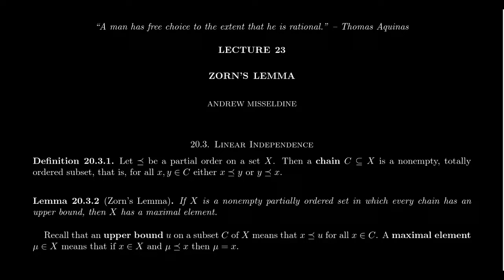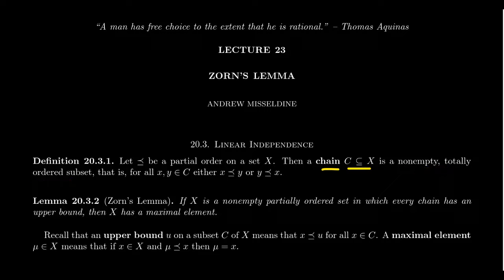Imagine we have some partial order on a set, so X is a partially ordered set. Remember that a partial order means that we have a reflexive, anti-symmetric, transitive relation. If we take a non-empty subset of our partially ordered set X, call it C, then it's called a chain if it's non-empty and totally ordered, which means that if you take any two elements X and Y inside of the chain C, we get that either X ≤ Y or Y ≤ X.